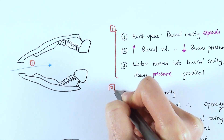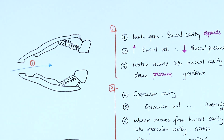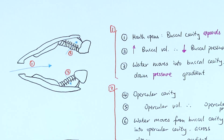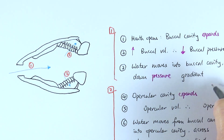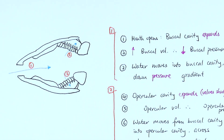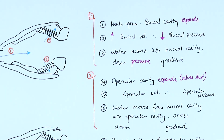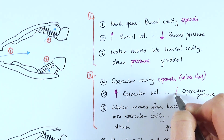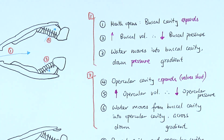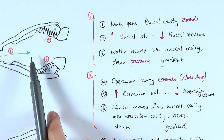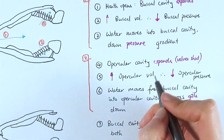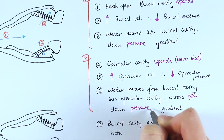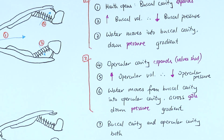Step two is about how water moves from the buccal cavity across the gills. The opercular cavity follows what the buccal cavity does — it also expands, but keeps its valve shut, forming an enclosed space. By expanding, the opercular cavity increases in volume and decreases in pressure. Because the opercular pressure is now even lower than the buccal pressure, water moves from the buccal cavity into the opercular cavity across the gills, performing gas exchange there. This movement is again down the pressure gradient — pretty much the same as the mammalian system.